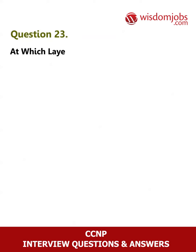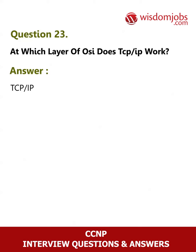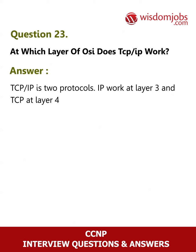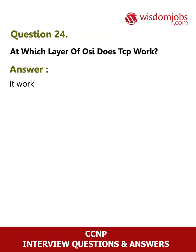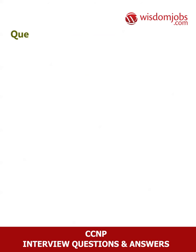Question 22: Is RIP v2 a link state protocol? Answer: No, it is a distance vector protocol. Question 23: At which layer of OSI does TCP/IP work? Answer: TCP/IP consists of two protocols — IP works at layer 3 and TCP at layer 4.